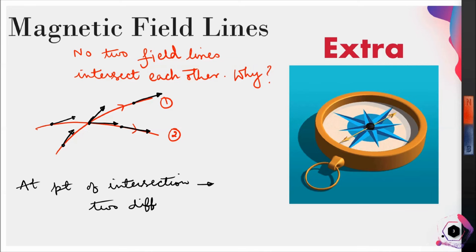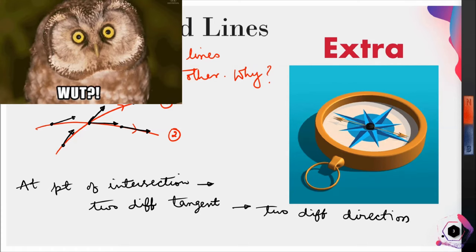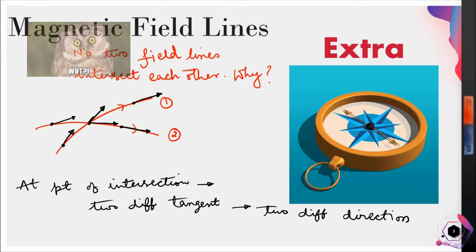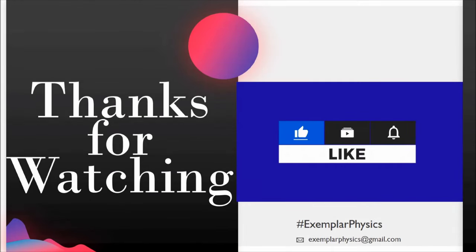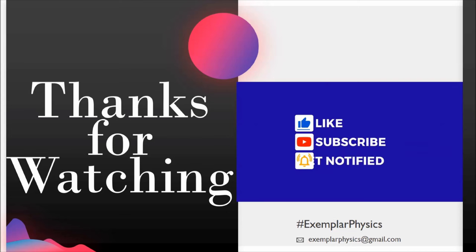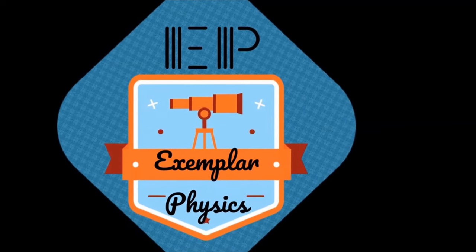If you placed a compass at the point of intersection, it cannot show two directions simultaneously — that's impossible. Hence two field lines can never intersect each other. I hope you understood the concept. If you have any doubts, write in the comment section. If you liked this video, please like, share, and subscribe. Thanks for watching — we'll meet again with another topic. Bye bye.